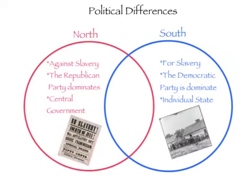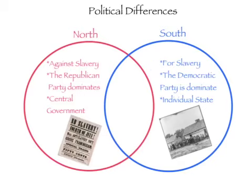Political Differences Between the North and the South. The North is against slavery while the South is for slavery. This is because the South depends on slaves to support their economy. Also, the South fears that the North will move to abolish slavery.